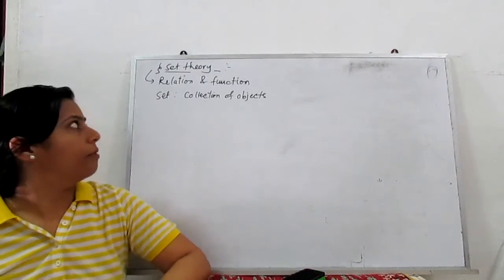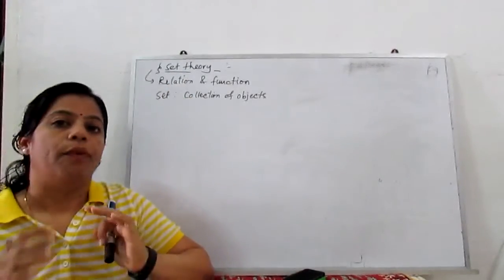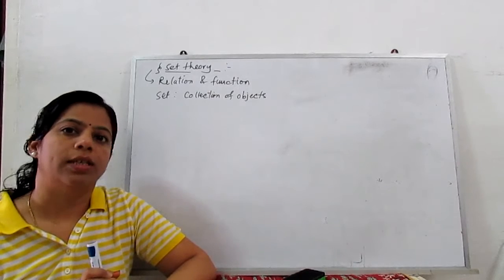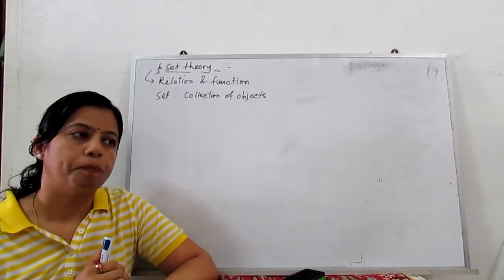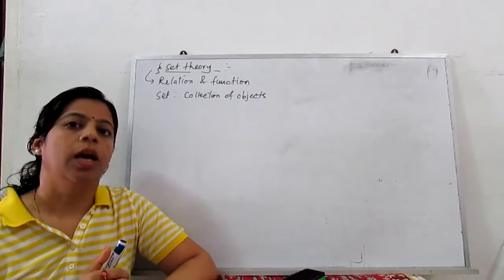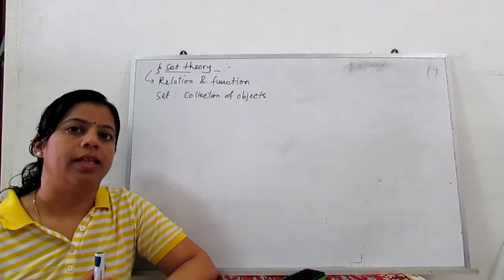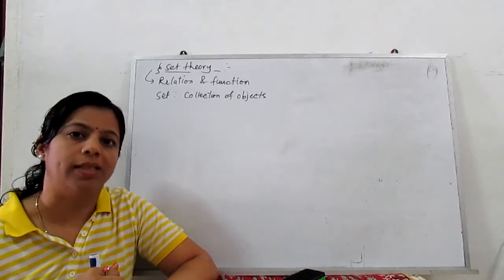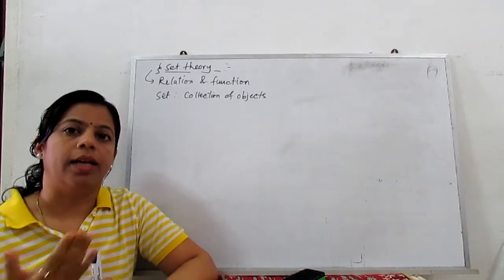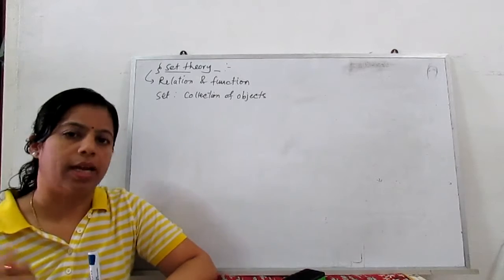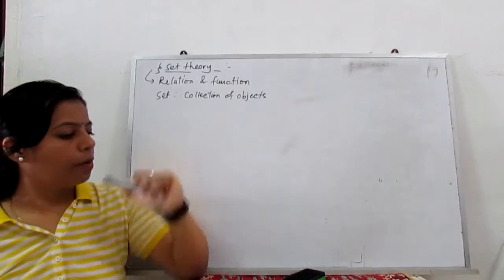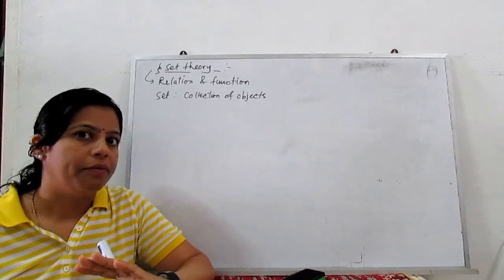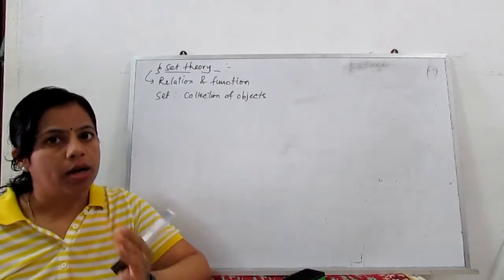Very basic definition: a set is a collection of any well-defined objects. For example, if we describe a set of the days in a week, we can say that collection is called one week. The elements for that set are Sunday, Monday, Tuesday, Wednesday, Thursday, Friday, and Saturday. So a set is a collection of objects — more specifically, a collection of well-defined objects is called a set.